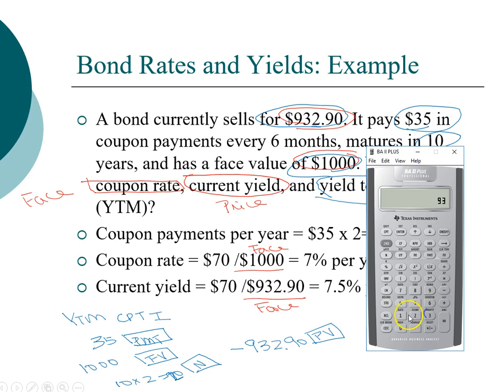So we first type in $932.90, change the sign to a negative sign, and that becomes our present value. We are computing the interest rate, so we'll compute I.